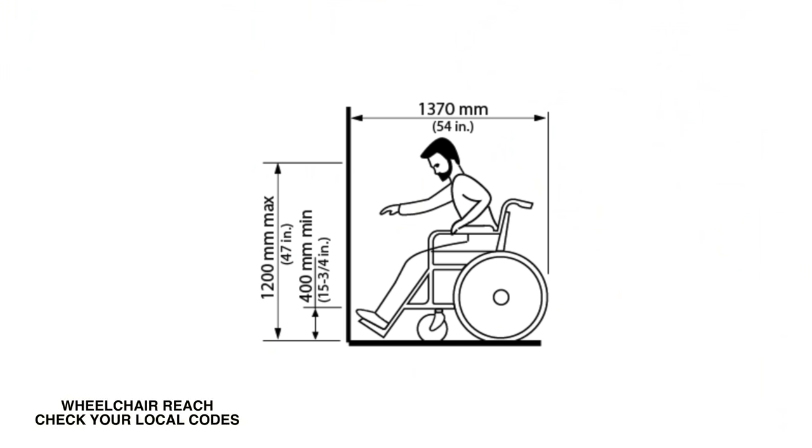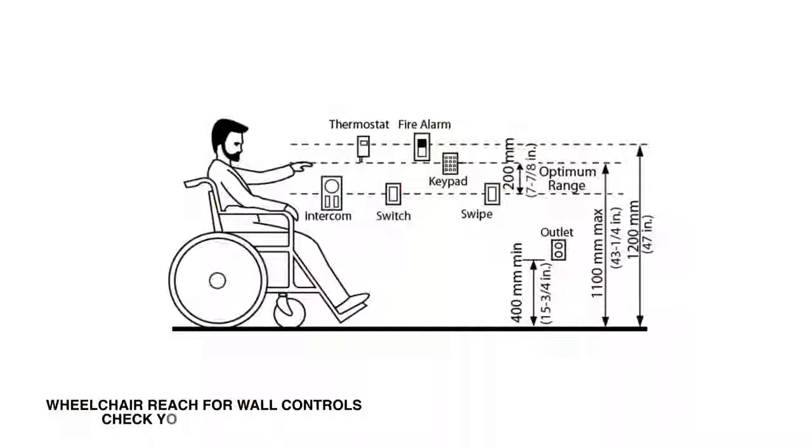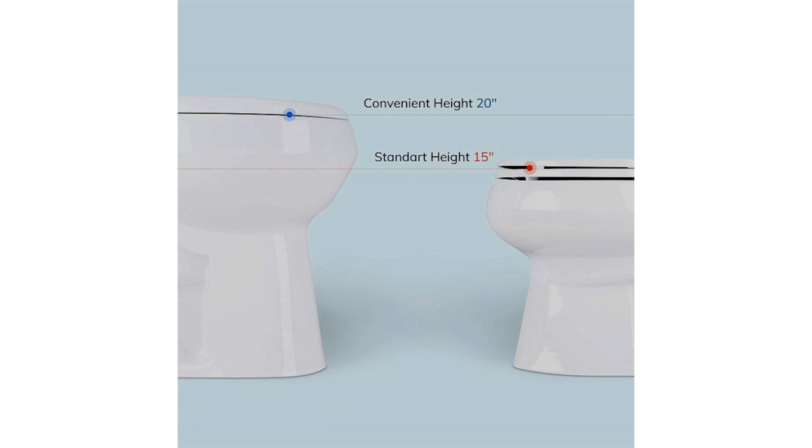Heights are key in universal design. There's a sweet zone for anything that needs to be touched or handled: consider a height range no lower than 15 inches and no higher than 48 inches off the floor. This includes storage, light switches, and towel bars. Light switches should fall within 32 to 48 inches from the floor. Countertops should not be higher than 34 inches. Look for comfort-height toilets with a higher seat — these require less bending, less pressure on the knees, and are easier to use when transitioning from a wheelchair.